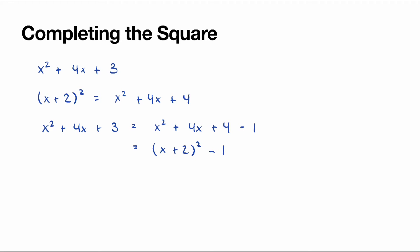Therefore, x² + 4x + 3 written in the completed square form is (x + 2)² − 1.